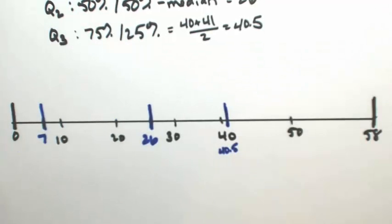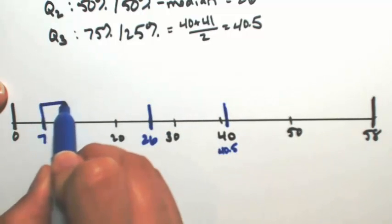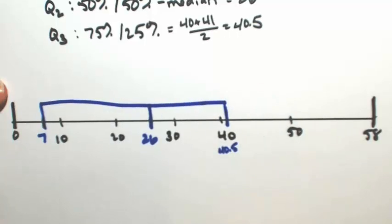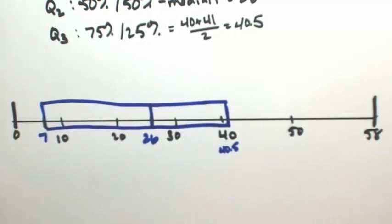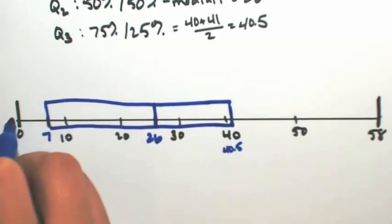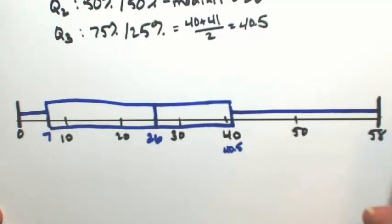So from these, we're going to form our box and whisker plot. So first of all, let's do the box. Connecting Q1 to Q2 to Q3. And then the whiskers are going to be from the minimum to Q1 and from Q3 to the max.